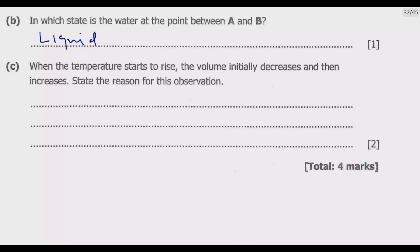So why does this happen? This behavior is a unique property of water known as anomalous expansion. Most substances expand when heated and contract when cooled. However, water behaves differently between 0 degrees Celsius and 4 degrees Celsius. When water is heated from 0 degrees Celsius, it contracts until it reaches 4 degrees Celsius, causing its volume to decrease, hence the initial decrease here.